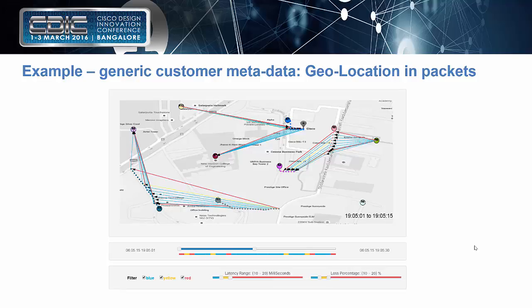Another example: if you embed GPS geolocation into the packet, you can suddenly visualize from bare packets where they were sent. This little demo here is a simulation of routers driving around the Bangalore campus, and you can really see the amount of delay and packet loss between any two routers as they communicate.